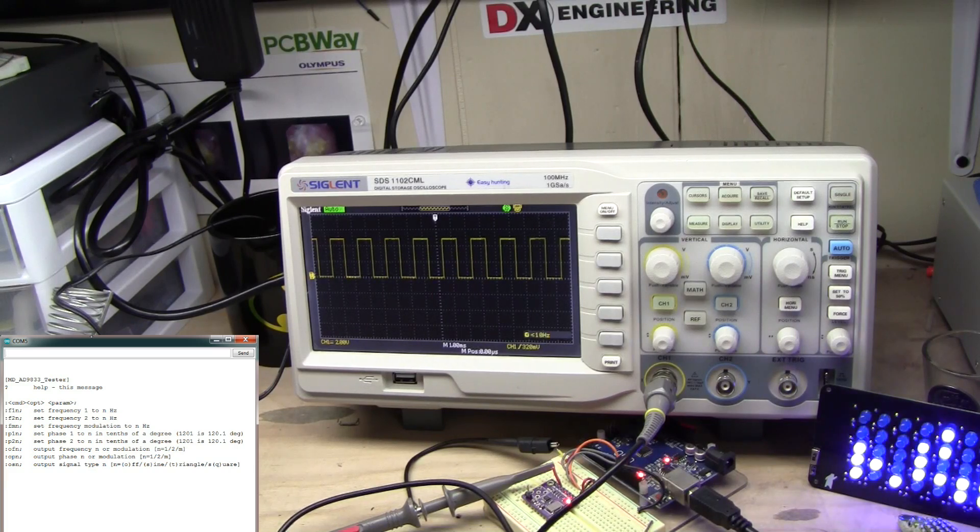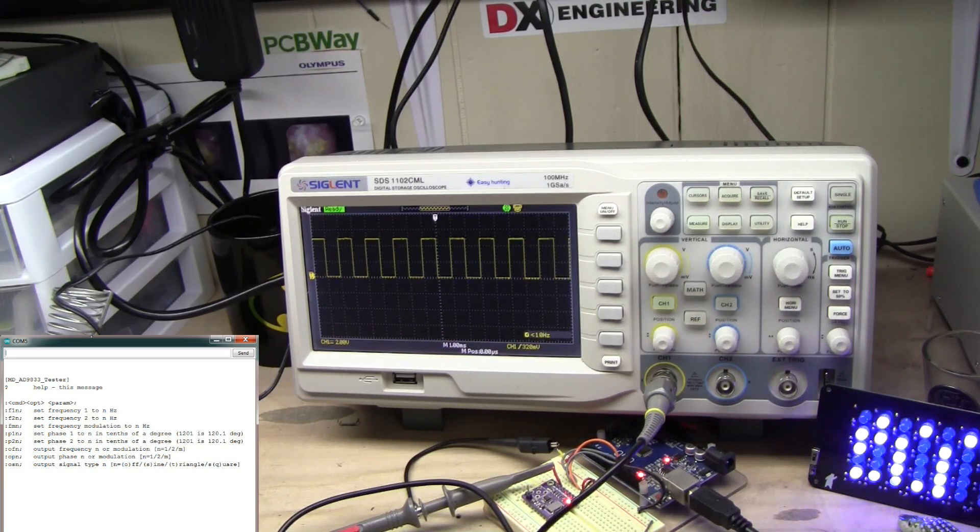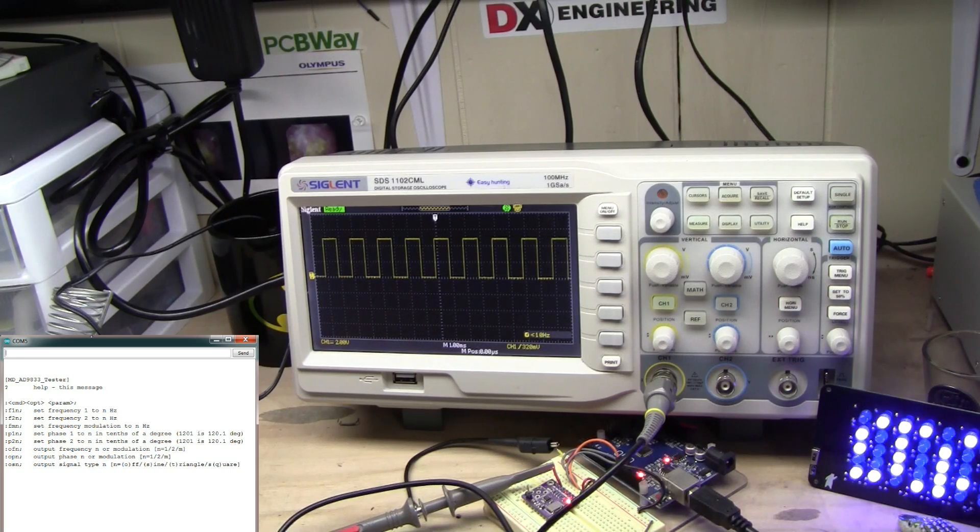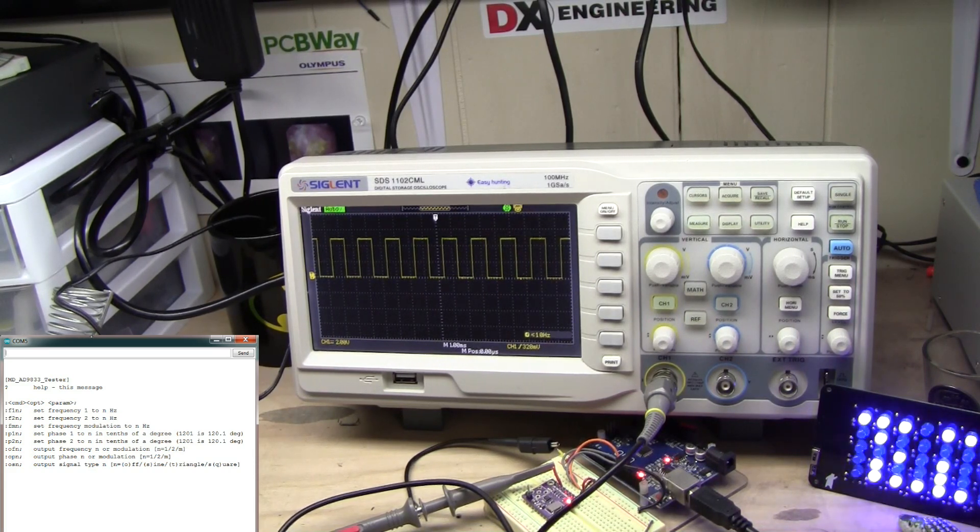And, you know, we can make this into a PC board. You can get a 9833 chip for like $3, and five PC boards for $5. And I'm hoping that for under $10, you know, you can get yourself a fully functional generator. So let me know what you think. That's what I'm getting at, alright?